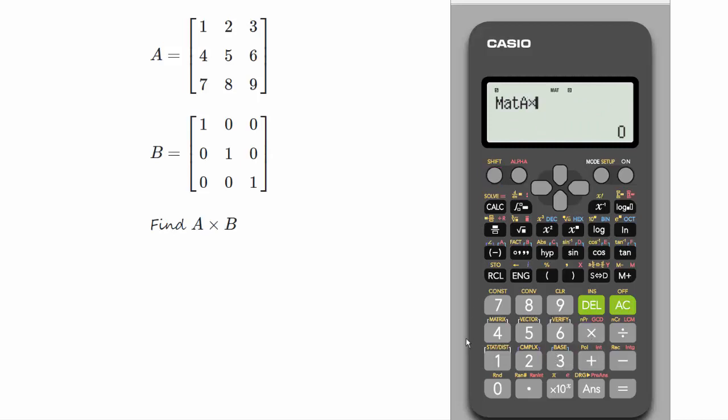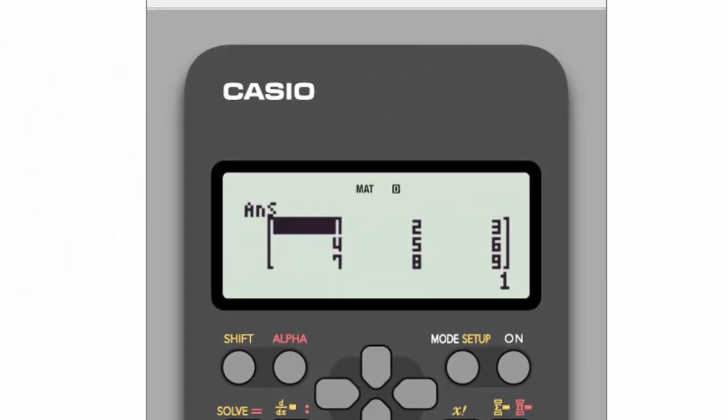And now we say equals, and there's our answer: 1 2 3, 4 5 6, 7 8 9, which is what we expected.